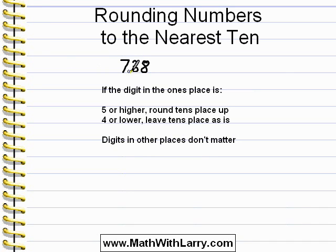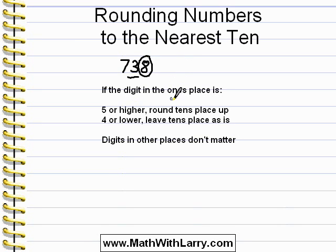It's a good idea to underline the place that you're rounding to, just so that you don't forget. So we're going to round to the tens place, and I'm going to circle the digit in the ones place, just so that we're reminded that that's where we should look — that's the significant digit. The digit in the ones place is 8, which is certainly 5 or higher, so that means we'll be rounding the tens place up. So, 738 becomes 740. It's as simple as that.